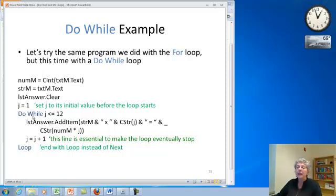And here's my condition, so I'm going to do this loop while j is less than or equal to twelve. So going to the same upper limit that I did with the for loop. I have exactly the same statement in the middle of the loop. It's printing whatever my string, say it's five, five times j equals and then whatever that product is.